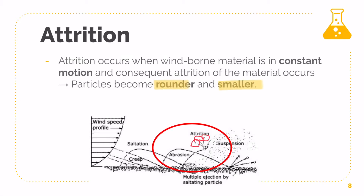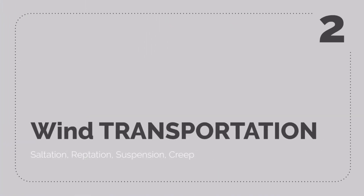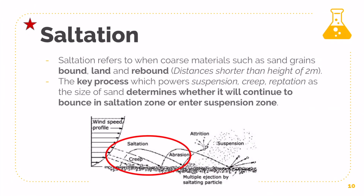Those are your main processes for erosion. Next, I'll move on to transportation. Saltation is going to be your first and most important one. What saltation is, is basically the bound, land, and rebound. When your particles are being lifted up — if they're very, very light — they're being lifted up for a very short distance, usually less than a height of two meters. They are basically lifted up and then thrown back down.